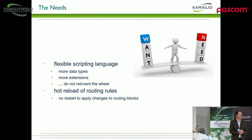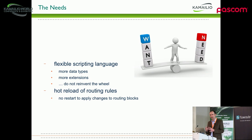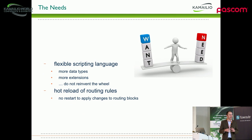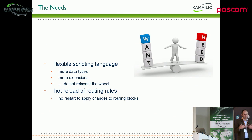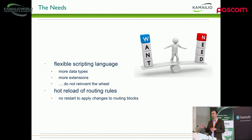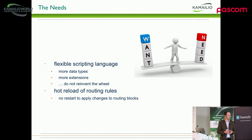As background information, why we started all this one and a half years ago: we had this evolution from static routing, then having a dynamic config file. The initial SIP Express Router config file was just some functions with static parameters. The next evolution was adding dynamic content with all these variables, so everyone wanted variables everywhere, so they could decide based on that content, not just do regular expression routing.